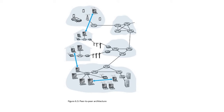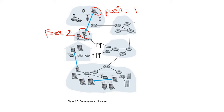The second example is peer-to-peer architecture. These are the peers — whenever clients communicate with another client, it is known as a peer. Peer 1 and Peer 2 communicate with each other. One device communicates with another device, or one end system communicates with another end system — this is peer-to-peer architecture.